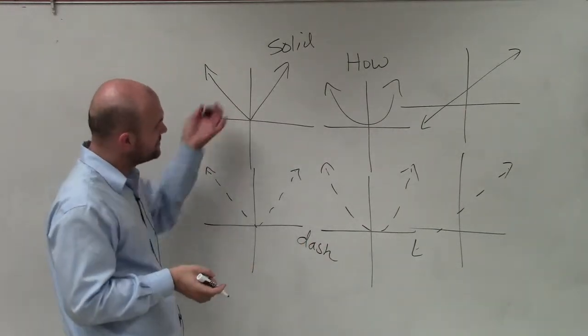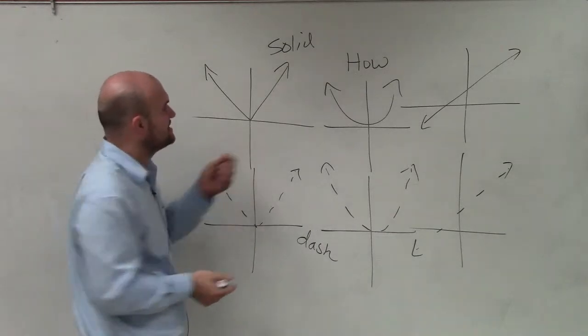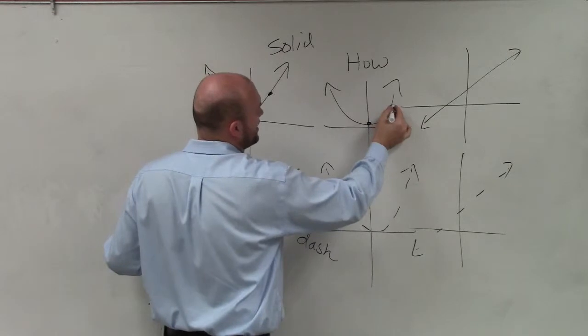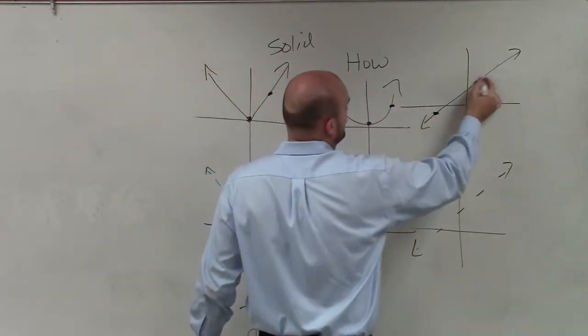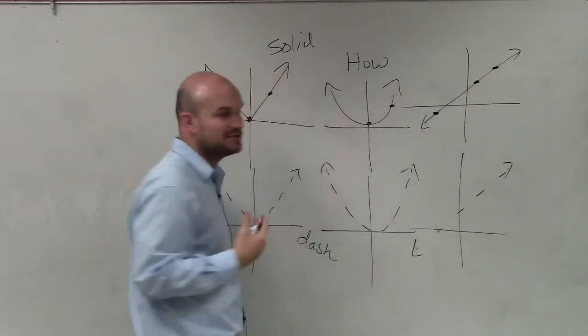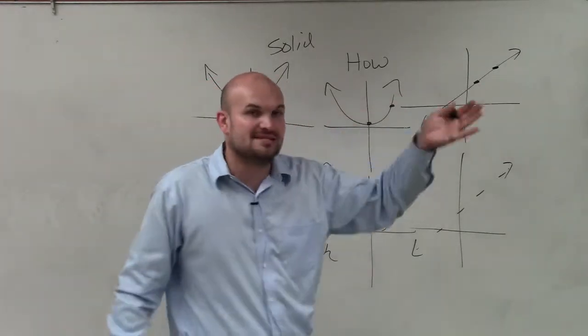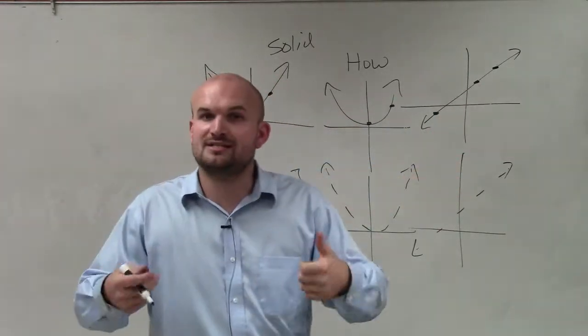The difference between solid and dashed lines is solid means every single point that is on your equation, on your graph, makes your inequality true. That means if you plug in the x and y coordinates for every point that's on that equation, your inequality is going to be true.